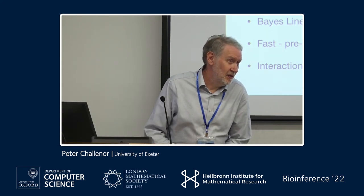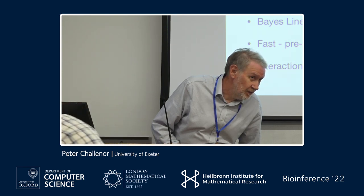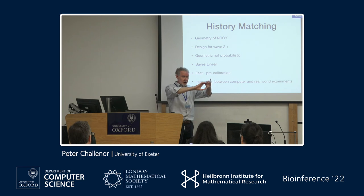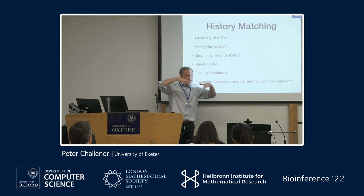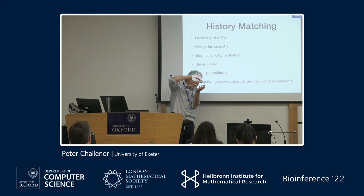Question: Since you're going through parameter space to knock out implausible regions, can you simultaneously identify where to refine your emulator if there's model behaviour only appearing in certain parts of parameter space? Yes, that's basically what we do. In wave one I build an emulator; in wave two, I build an emulator on the remaining space. My emulator is now much better, partly because I'm learning about the emulator, and partly because the weird parts of model space have gone. So as we zoom in, we get a better and better emulator because we're getting a closer, better-behaved model.